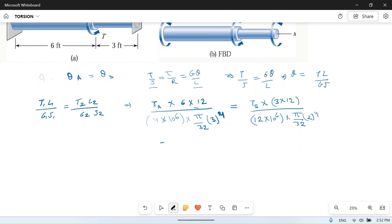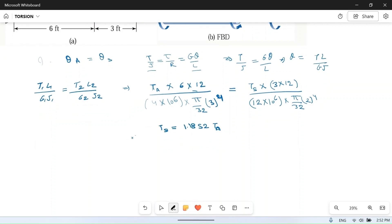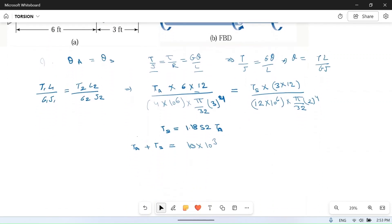Solving this gives T_S = 1.185 × T_A. Now T_A + T_S = 10 kip-inch. Solving these equations gives T_aluminum = 4576 lb-in and T_steel = 5424 lb-in.